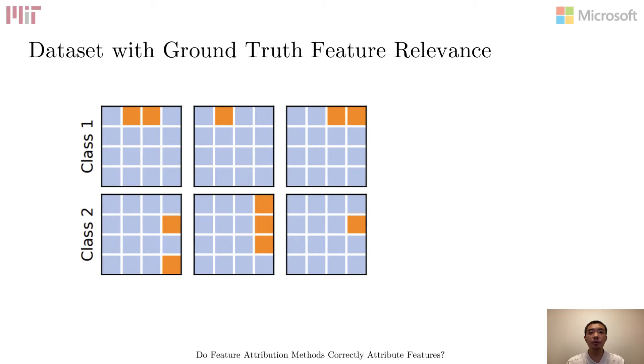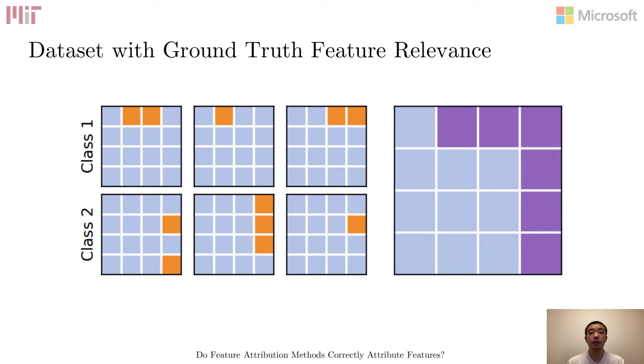As a concrete example, suppose that we have data points for two classes. For every input, we know that only the orange features are correlated with the label, and the blue ones are completely non-informative. Therefore, if a model achieves more than random performance, we know that it must rely on these orange features. In addition, if the model also achieves perfect accuracy, then it must not be distracted by the irrelevant features. Combining these two together for such a model, we should expect the feature attribution explanations to focus on the union of all orange feature locations, or the purple features, in the image on the right.